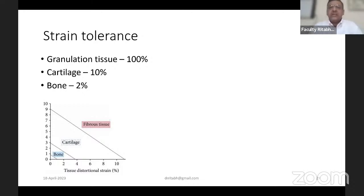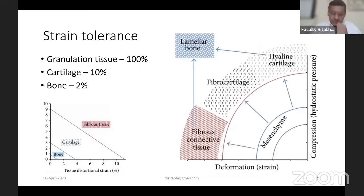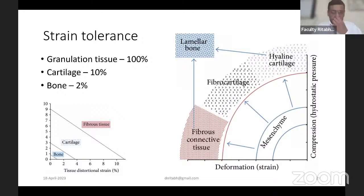If there is too much motion at the fracture site, a pseudarthrosis will form — fibrous nonunion. Over time, fibrous tissue may convert to cartilage at the bone ends, but bone never bridges across, becoming a nonunion. This diagram, explained by Pauwels almost 100 years ago, describes how along a certain path, cartilage converts into bone and fibrous tissue can also get converted into bone — the mechanobiological cascade of fracture healing.